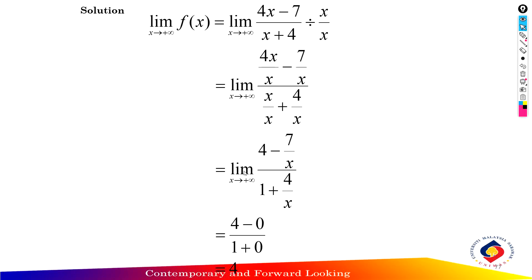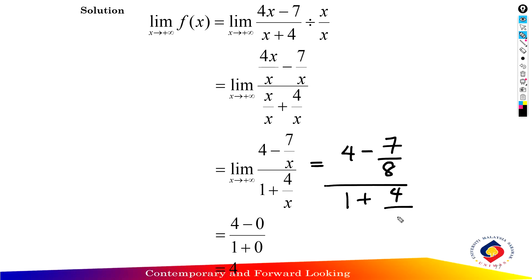So the limit as x approaches positive infinity of 4 minus 7 over x, over 1 plus 4 over x. Substitute infinity: 4 minus 7 over infinity, over 1 plus 4 over infinity. Now 1 over infinity equals 0, so 7 over infinity equals 0, and 4 over infinity equals 0. So we get 4 minus 0 over 1 plus 0. Therefore the limit as x approaches positive infinity of f(x) equals 4.